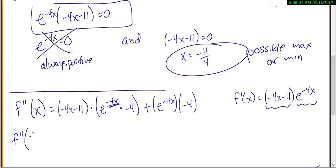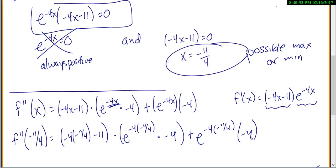Now, what you'll do, you could simplify, but we're going to plug that x value into our second derivative. So, negative 4 times negative 11 over 4 minus 11 times e to the negative 4 times negative 11 over 4 times negative 4, plus e to the negative 4 times negative 11 over 4 times negative 4. Now, notice right here, this negative 4 times negative 11 over 4.